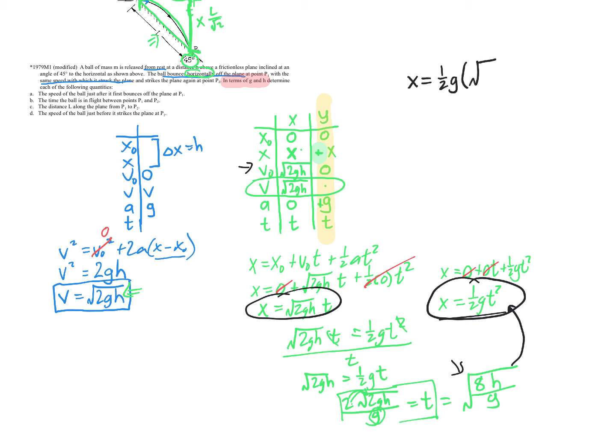So I'm just going to, because I got a square root, so I'm going to use this one so that I can square it. So we're just going to say X is equal to 1 half G, and then that time, which is square root of 8H over G, squared. And so X is equal to 1 half G times 8H over G. The G's there, look at that, are going to cancel out. And so X is equal to 4H. Now, of course, that's just X. And remember that L is the length of the slant there.